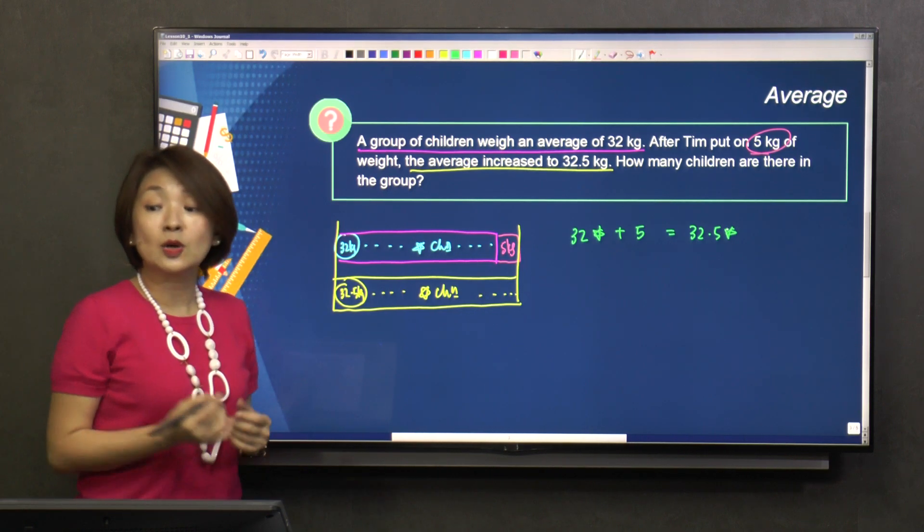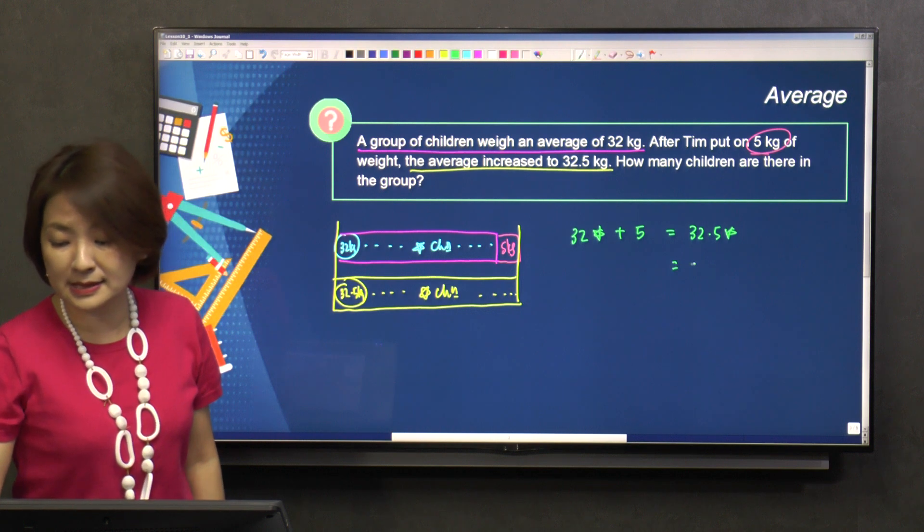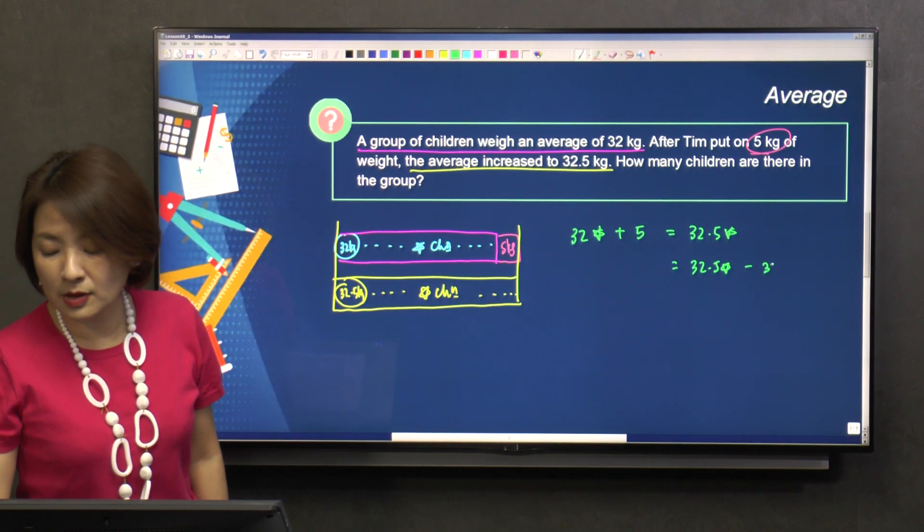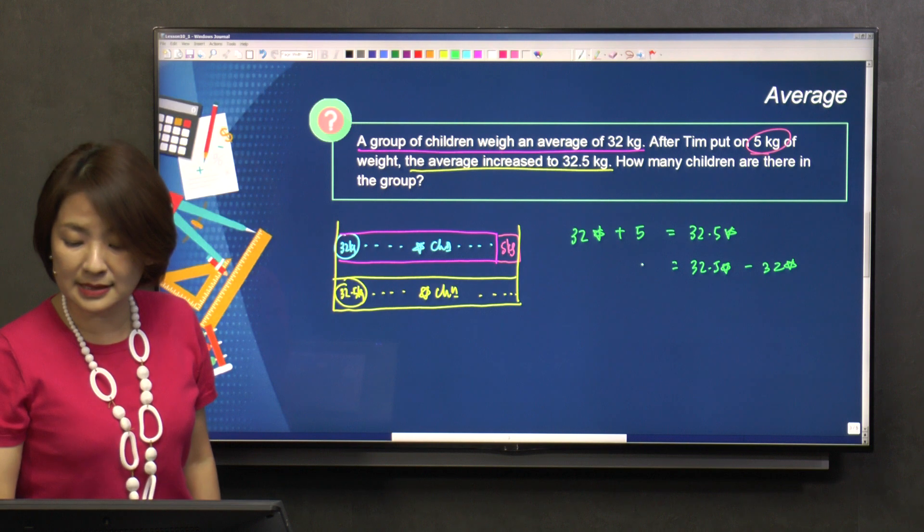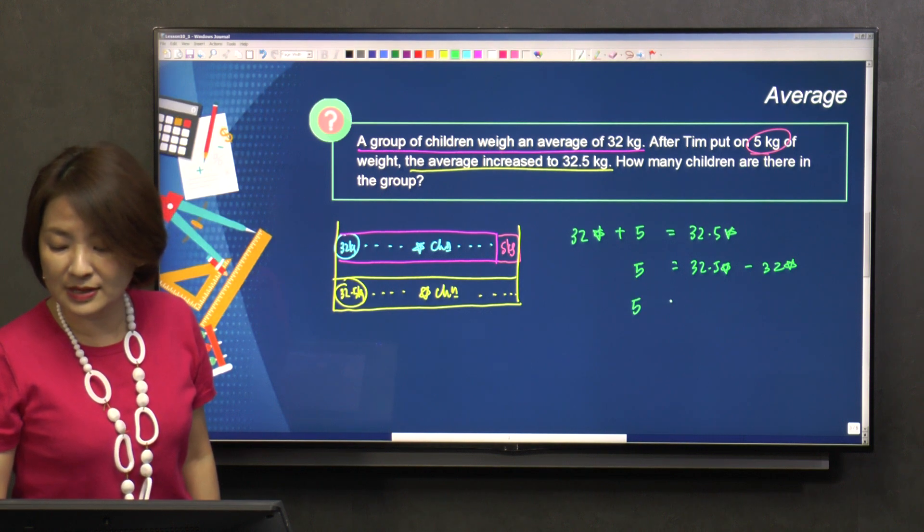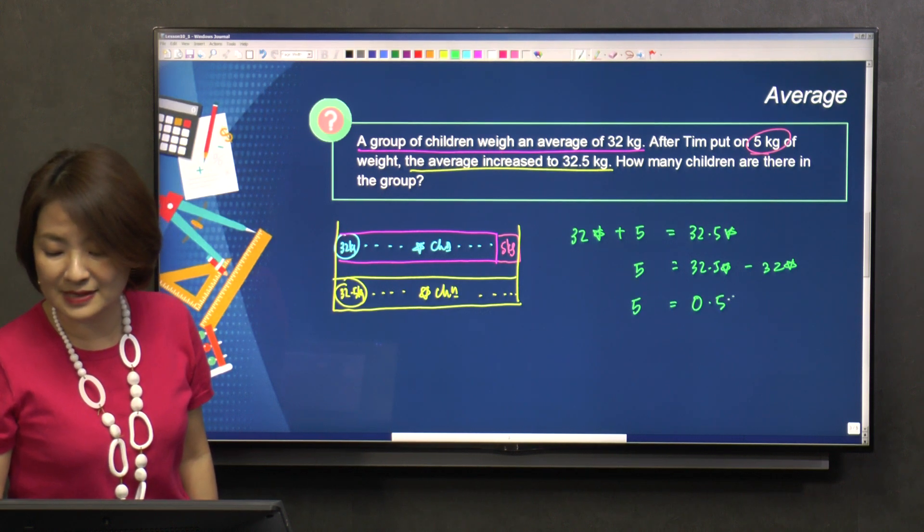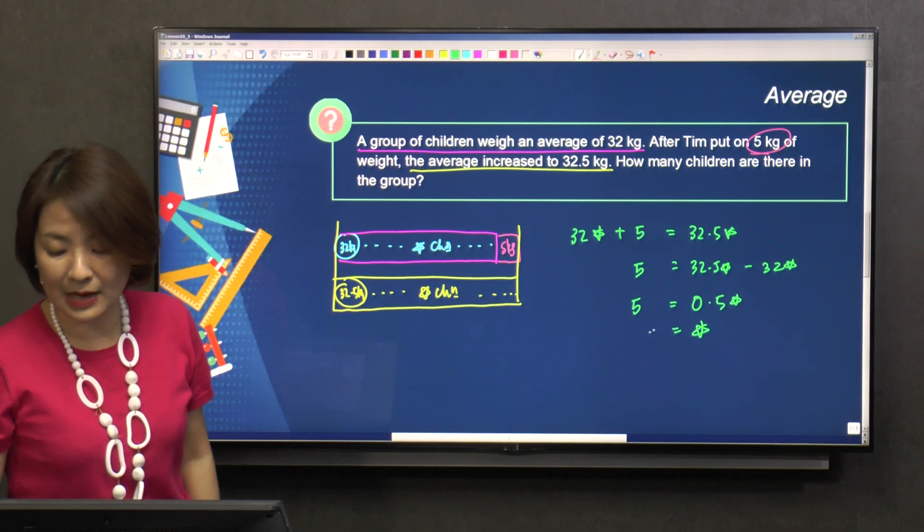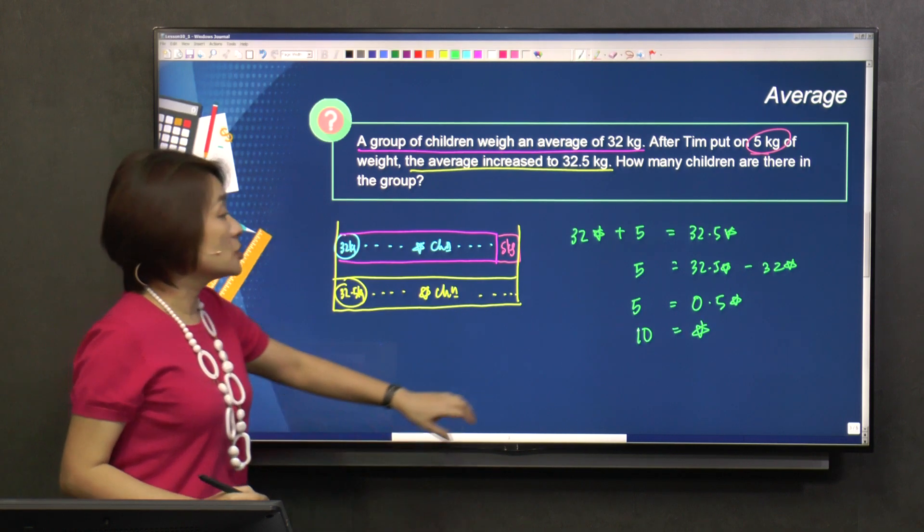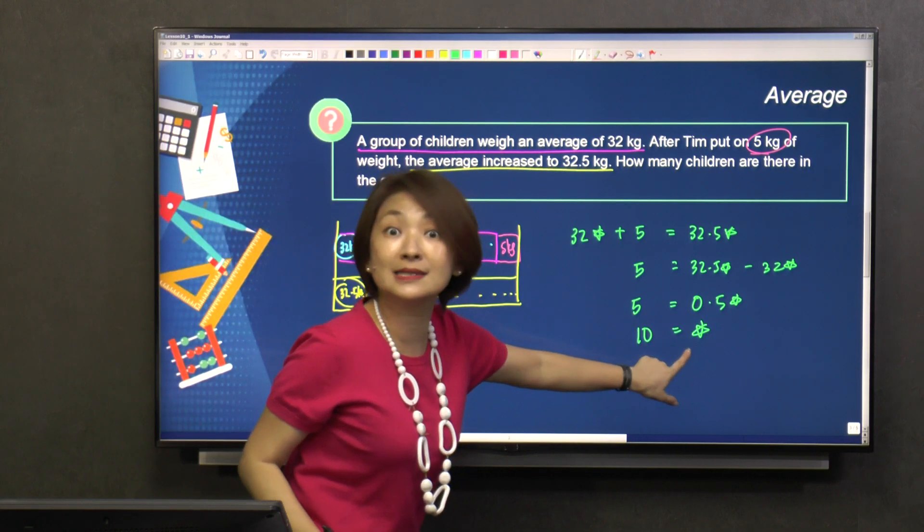How do you solve it? Big monster stays, small monster crosses over, become minus, and this is a 5. So 5 is equals to 0.5 star. What is star? Star will be 10. Half a star is 5, so one star is 10.